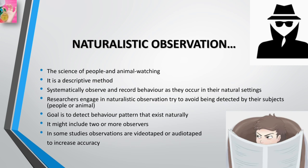When psychologists systematically observe and record behavior as it occurs in a natural setting, they are using the descriptive method called naturalistic observation. Researchers usually try to avoid being detected by their subjects, whether people or non-human animals. The basic goal of naturalistic observation is to detect behavior patterns that exist naturally — patterns that might not be apparent in a laboratory or if subjects knew they were being watched.